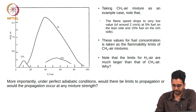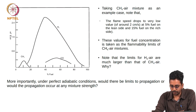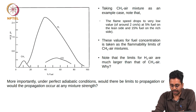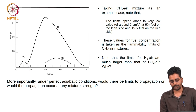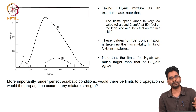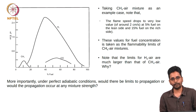By this experimental procedure, flammability limits have been experimentally determined for a variety of fuel-oxidizer mixtures. Let us take methane-air as an example. The flame speed drops to a very low value of about 2 centimeters per second at 5 percent fuel on the lean side, and also to about 2 centimeters per second at 15 percent fuel on the rich side. These values for fuel concentration are taken as the flammability limits of methane-air mixtures.